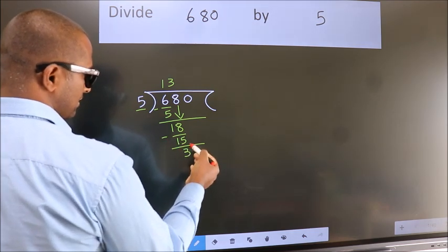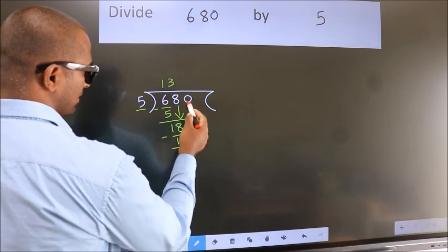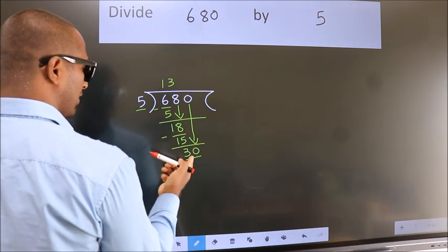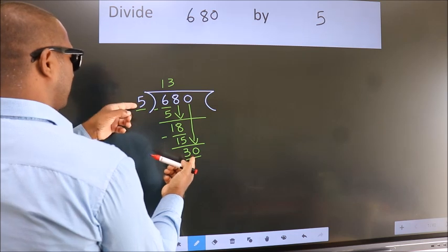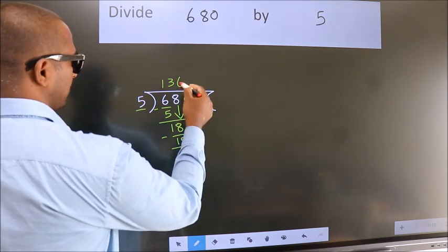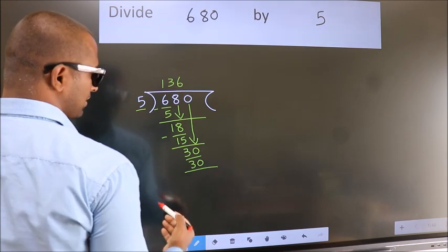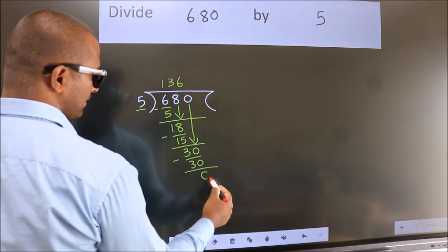After this, bring down the beside number. So 0 down. So 30. When do we get 30? In 5 table. 5 six 30. Now we subtract. We get 0.